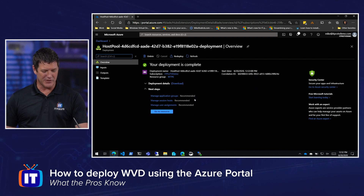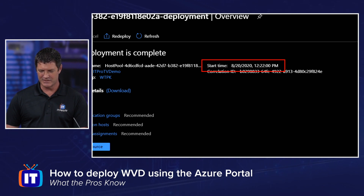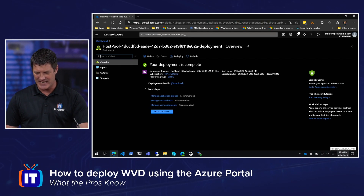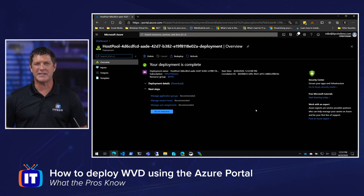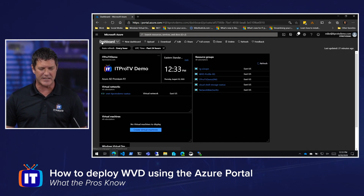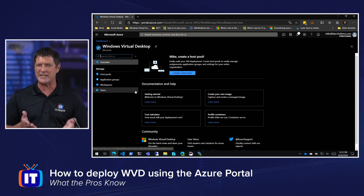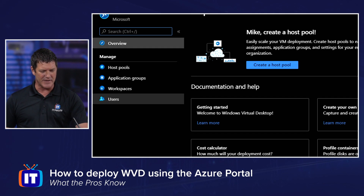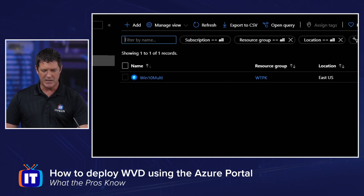Using a little TV magic — we go away and come back. We have a green checkmark. It says my deployment is complete. We started at 12:22 PM and my system time is 12:33, so about 11 minutes for that deployment. There's a link to go to resource, which takes me right to the host pool. But I'm going to go back to the dashboard and choose Windows Virtual Desktop to come back to that single pane of glass where I manage all my different aspects. I can see my Win10Multi host pool is now there.